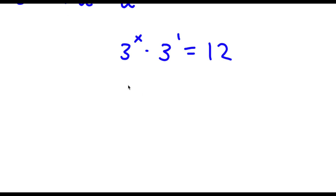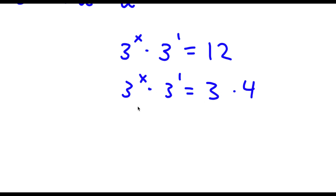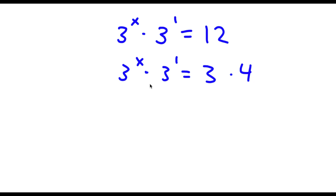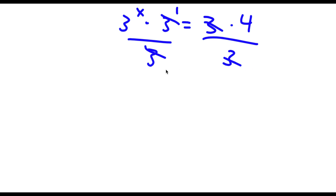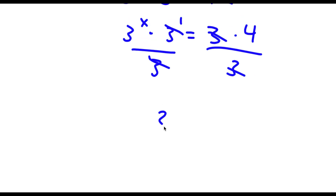Now I'm going to rewrite 12 as 3 times 4. Since both sides have 3 in them, I'm going to divide both sides by 3. These two cancel out and these two cancel out, and now I'm simply left with 3 to the power of x is equal to 4.